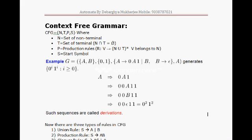Hello students, welcome back to our class on automata. In our last class we discussed how computer grammar works and the different types of grammars available in theory of computer science. From the classification of Noam Chomsky, we learned about a special type of grammar called type-2 grammar or context-free grammar. The production rules of any grammar differentiate its different types.